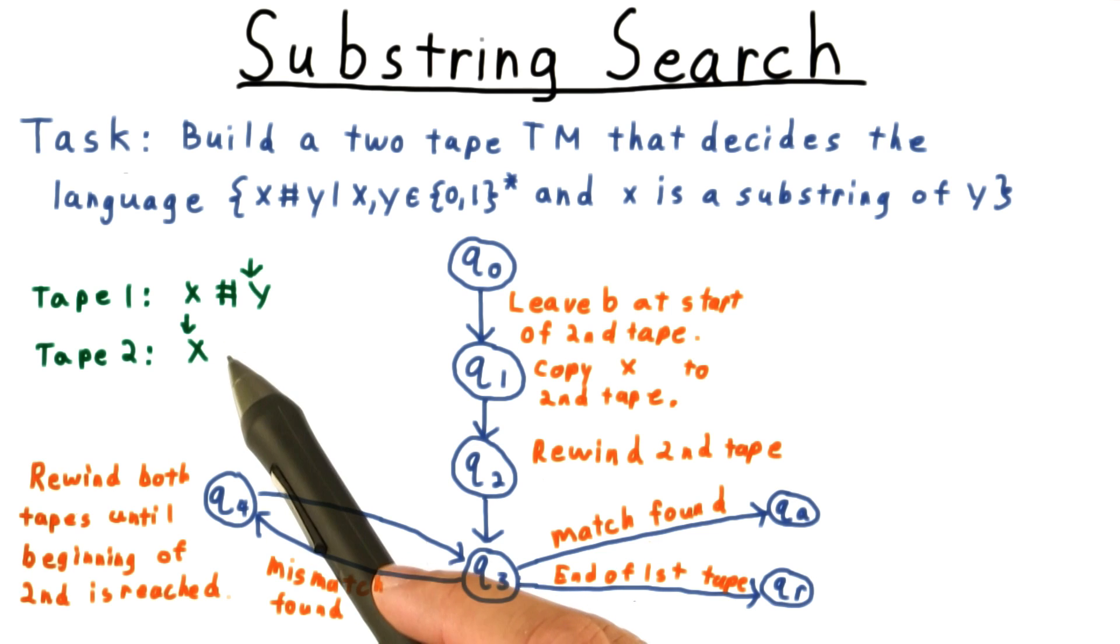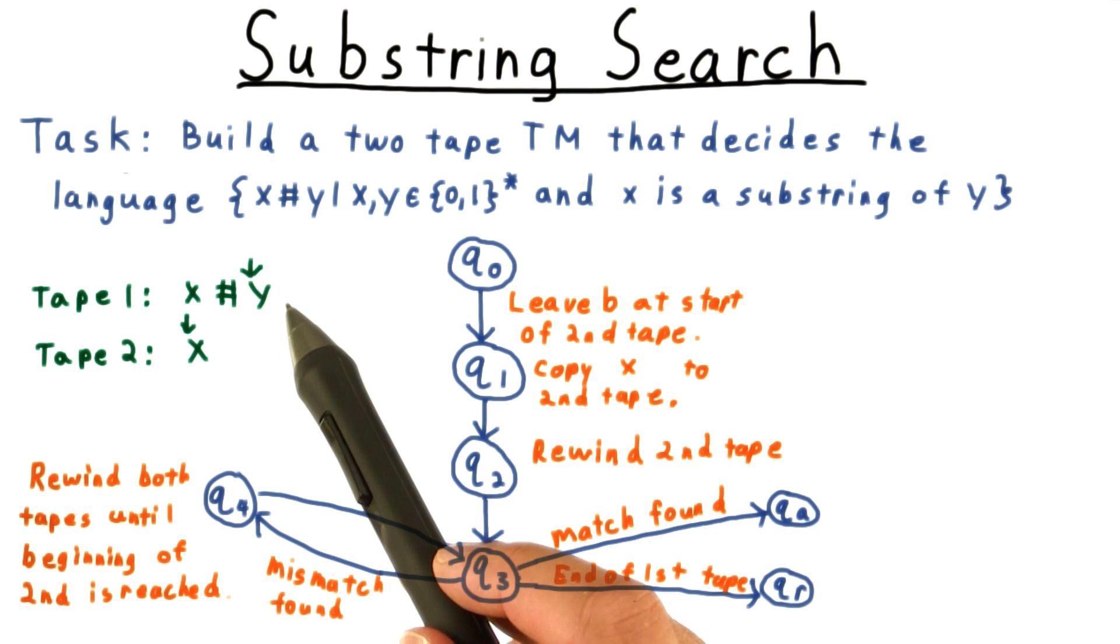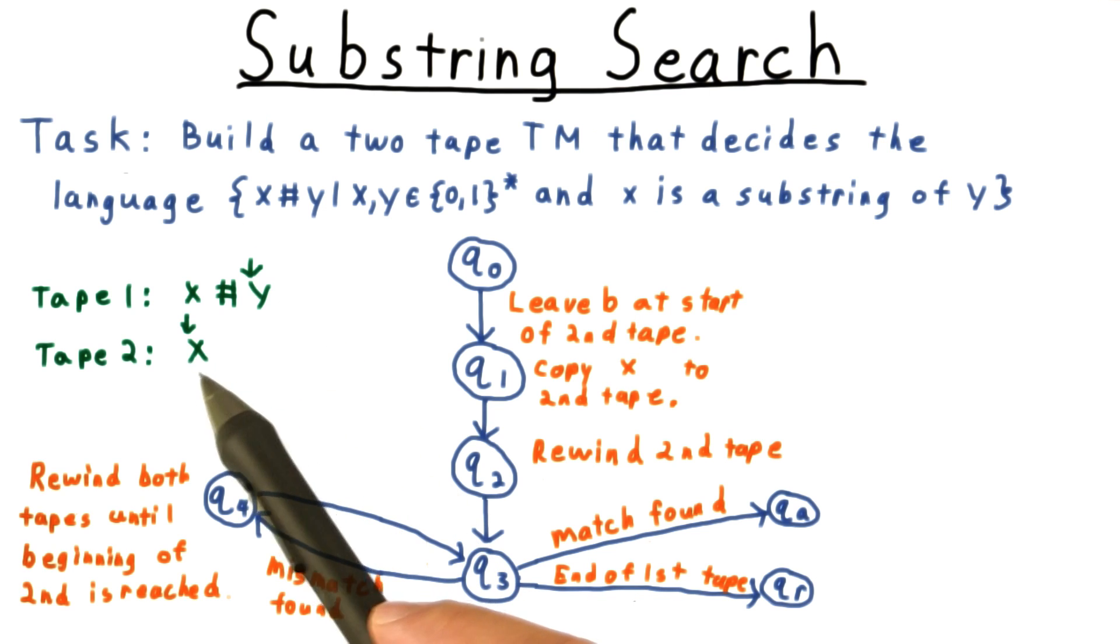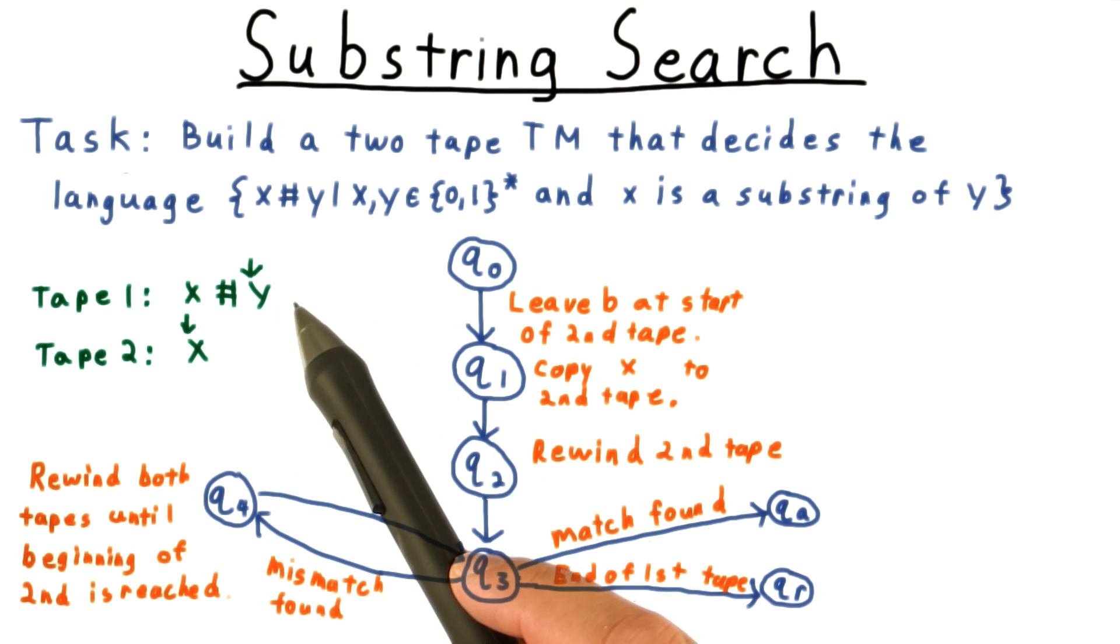If we reach the blank cell at the end of x, then we've found a matching substring and we accept. If we reach a blank on the first tape, then we reject. Since that means that x is longer than the remaining portion of y to search.